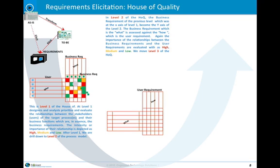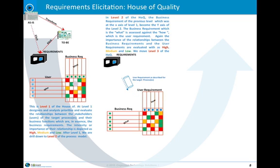Then we can drill down and what we do here is we rotate. The business requirements now become the y-axis and then we elicit the user requirements for the target process. This is very much the to-be. We score again high, medium and low the business requirements against the user requirements. We might think of this as the what against the how.